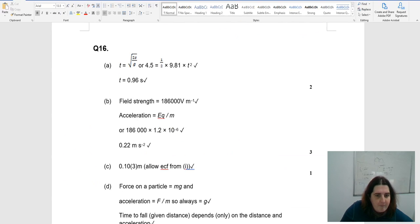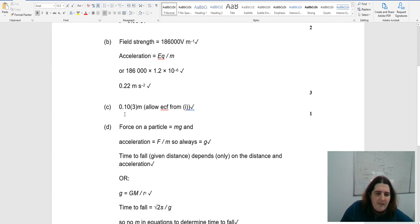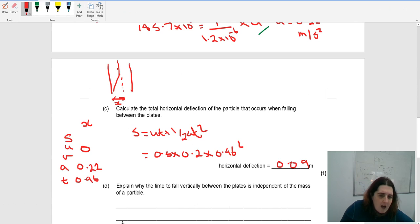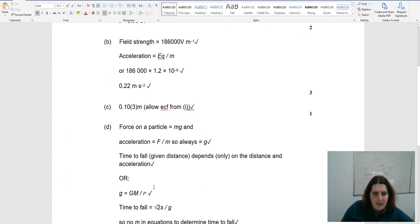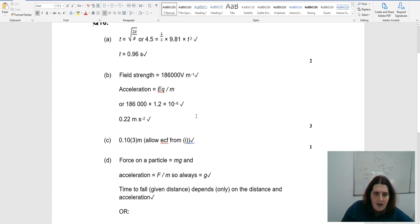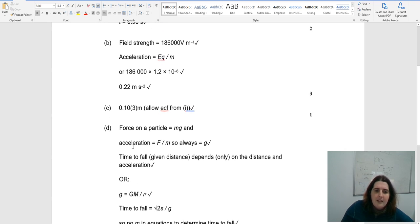Checking the mark scheme, they got 0.1. I got 0.09 using 0.22 and a lot of rounding. They're being quite generous, allowing for error carry forward.